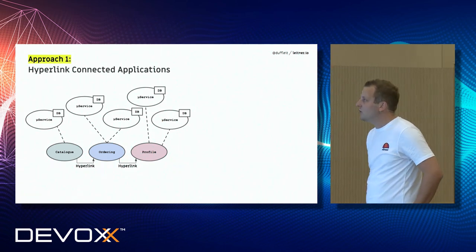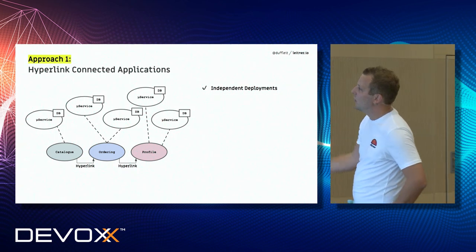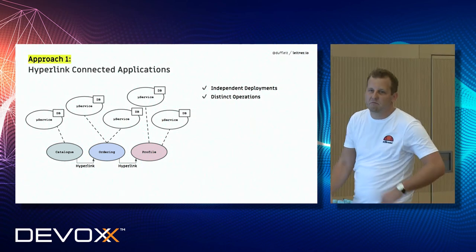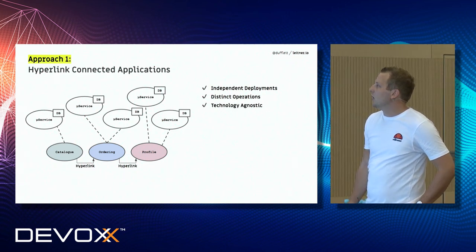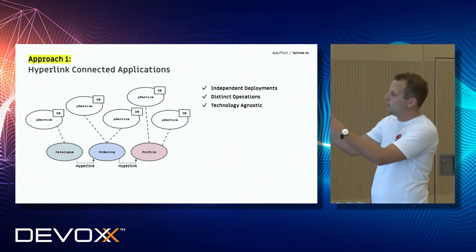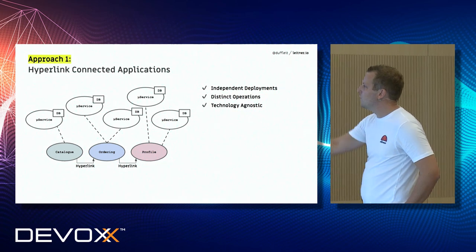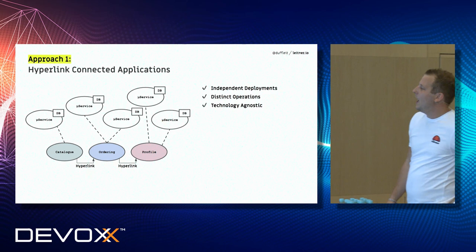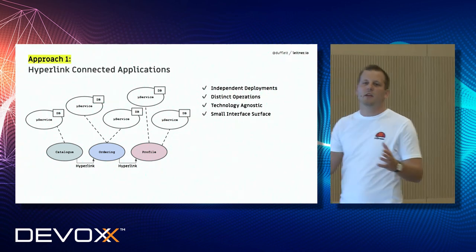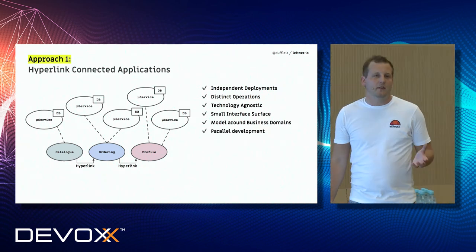With hyperlink-connected applications, we regain independent deployments — we can deploy our frontends independently. We have distinct operations, so each application can run on its own, die on its own, maybe even restart on its own. We are technology agnostic — we could build the catalog in React, the ordering in Angular, and the profile in another framework. We could build all those applications in different frameworks if we want the user to download a new framework every time they switch pages.